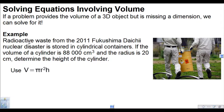Radioactive waste from the 2011 Fukushima Daiichi nuclear disaster is stored in cylindrical containers like the one you see here. If the volume of the cylinder is 88,000 cubic centimeters and the radius is 20 centimeters, determine the height. Volume is given to us, and here's the formula for volume of a cylinder.